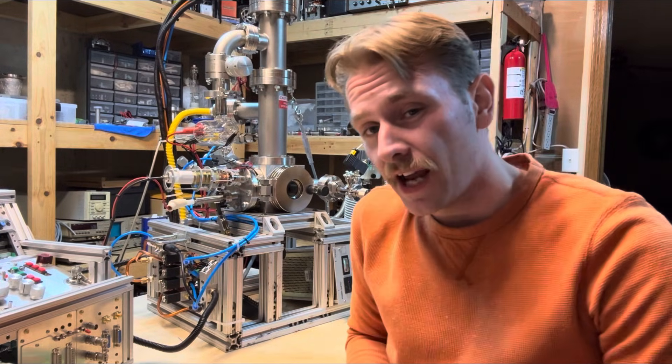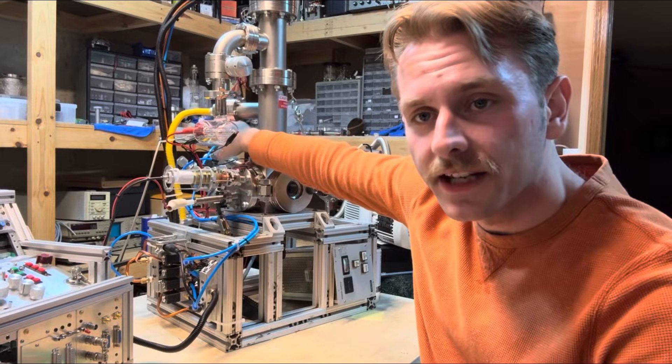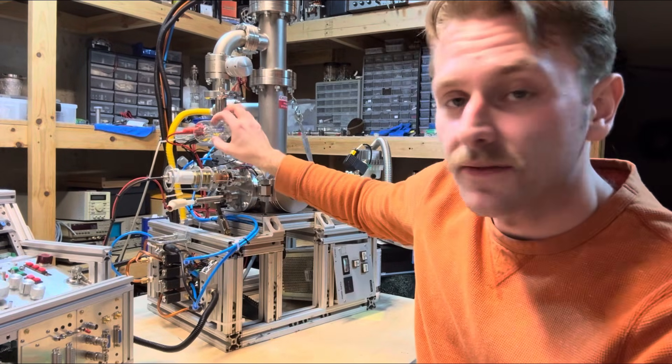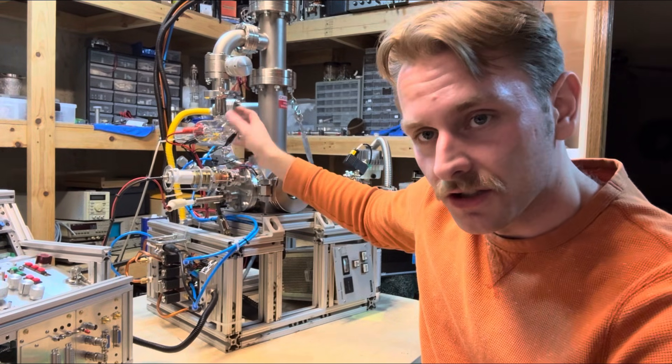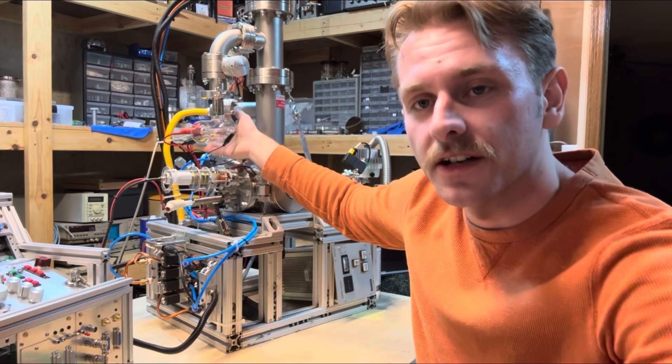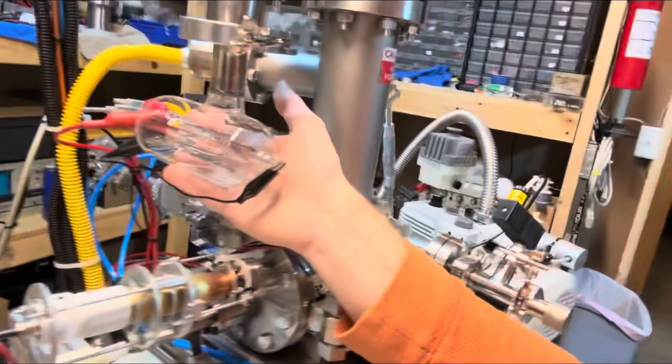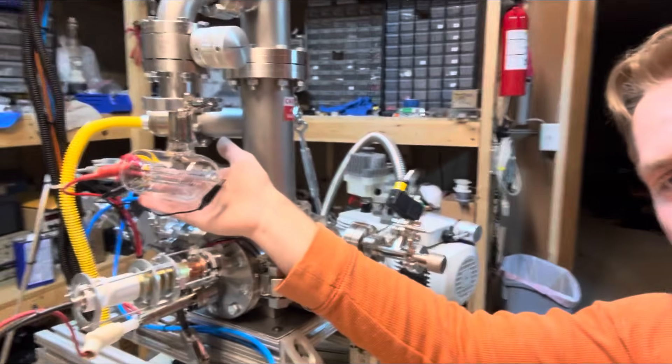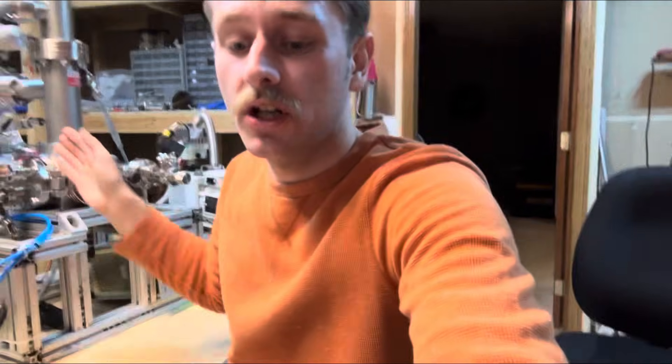To measure the vacuum level, there's two gauges. So I got a Pirani gauge back here. And then here, this is a vacuum ionization gauge. It's like a glass ampoule. This is like one of the coolest looking contraptions that I have in my shop. I love this thing. It's actually called a Bayard-Alpert nude ion gauge.